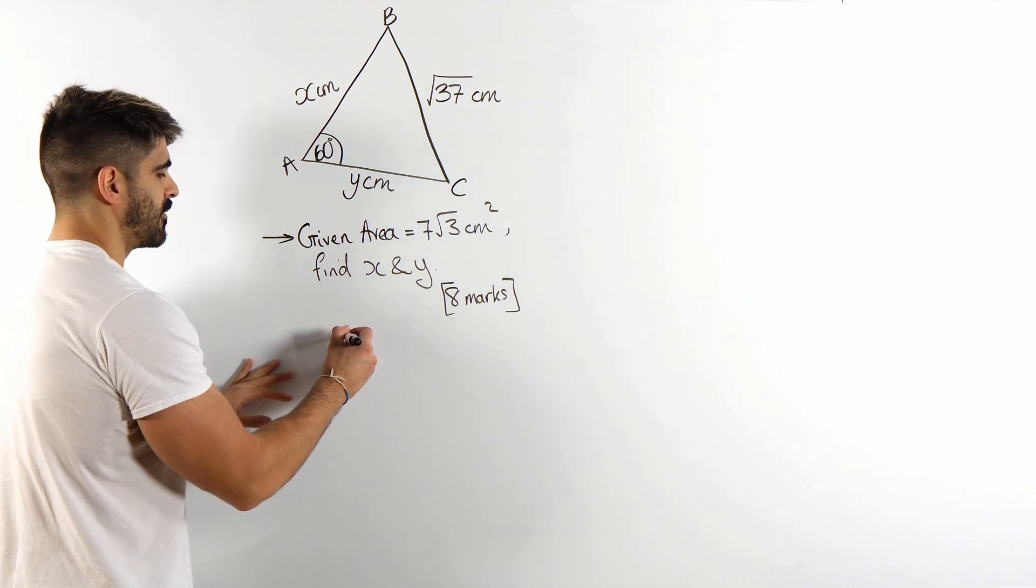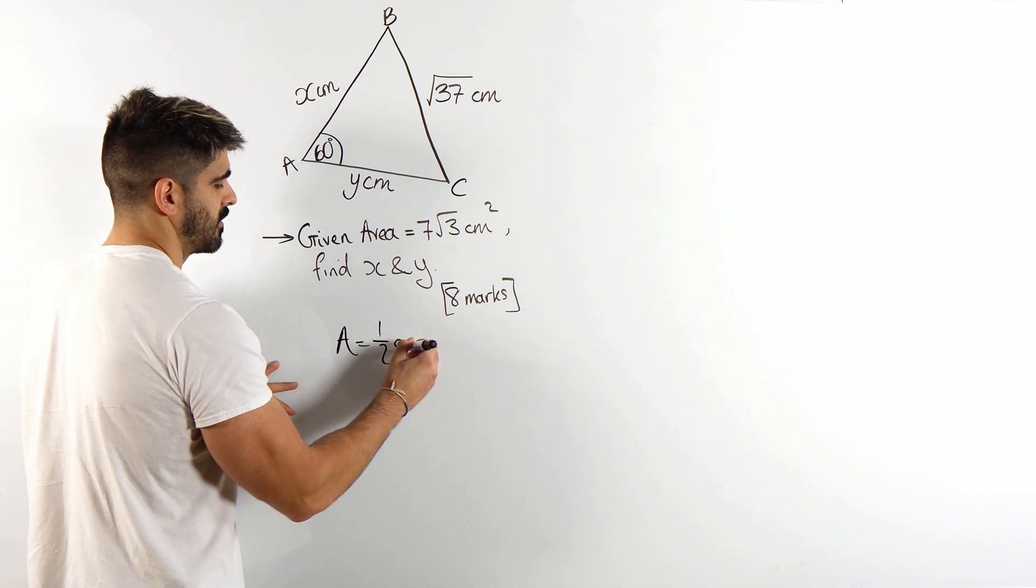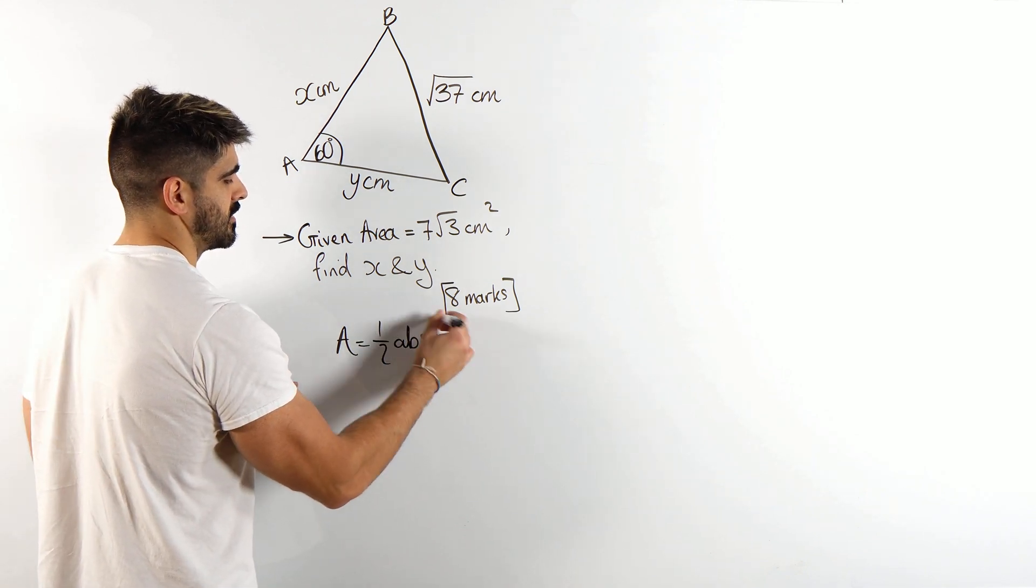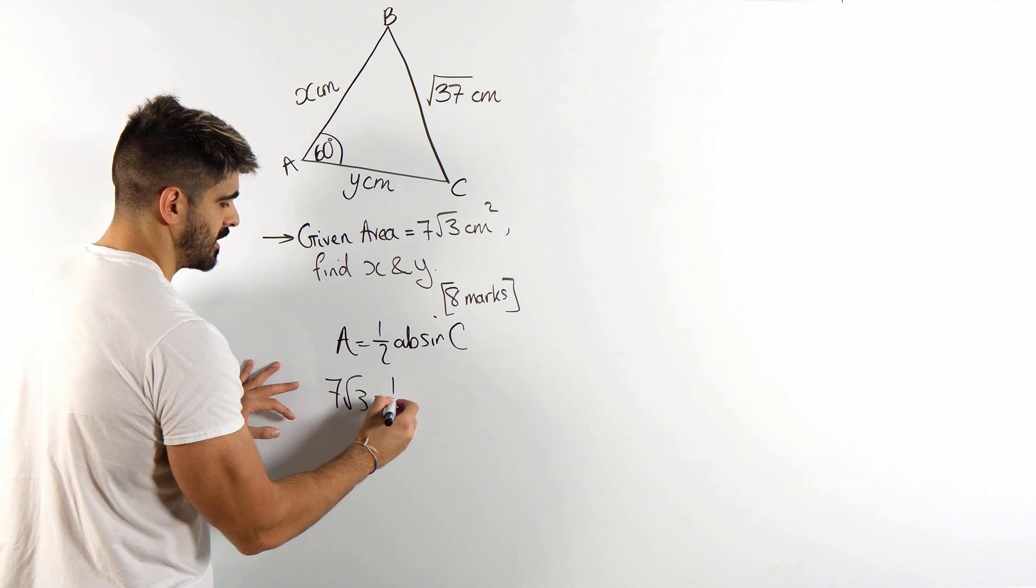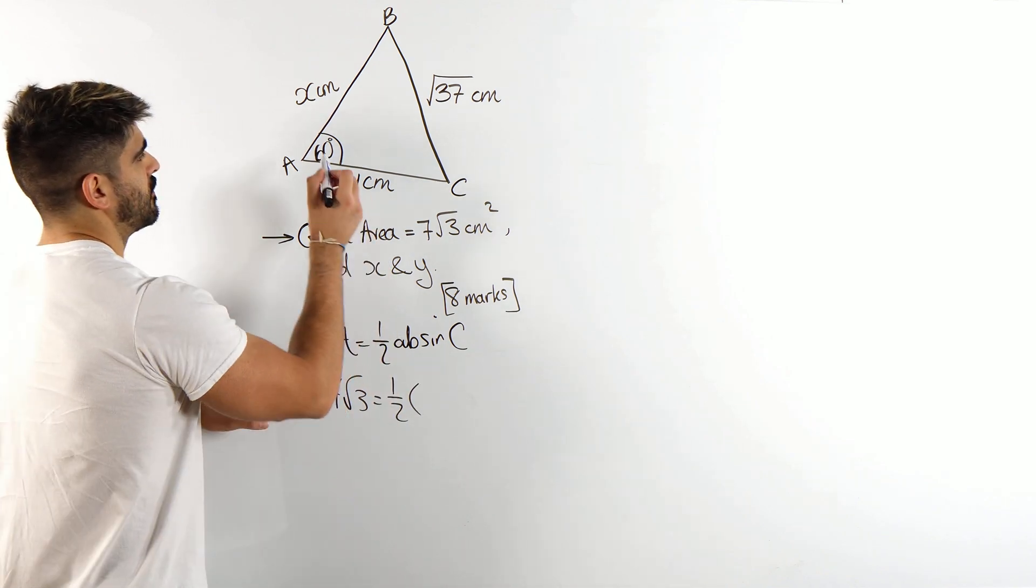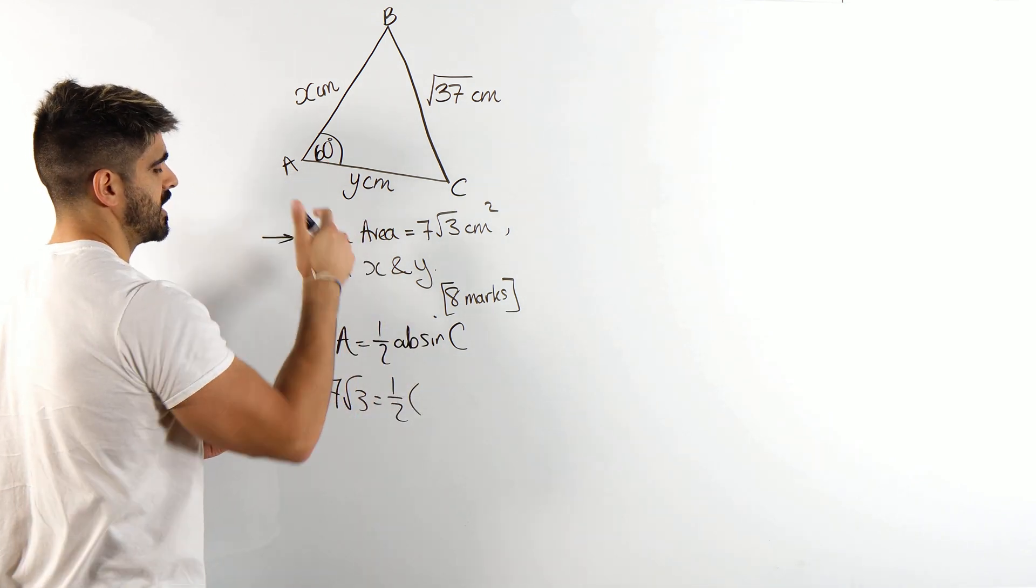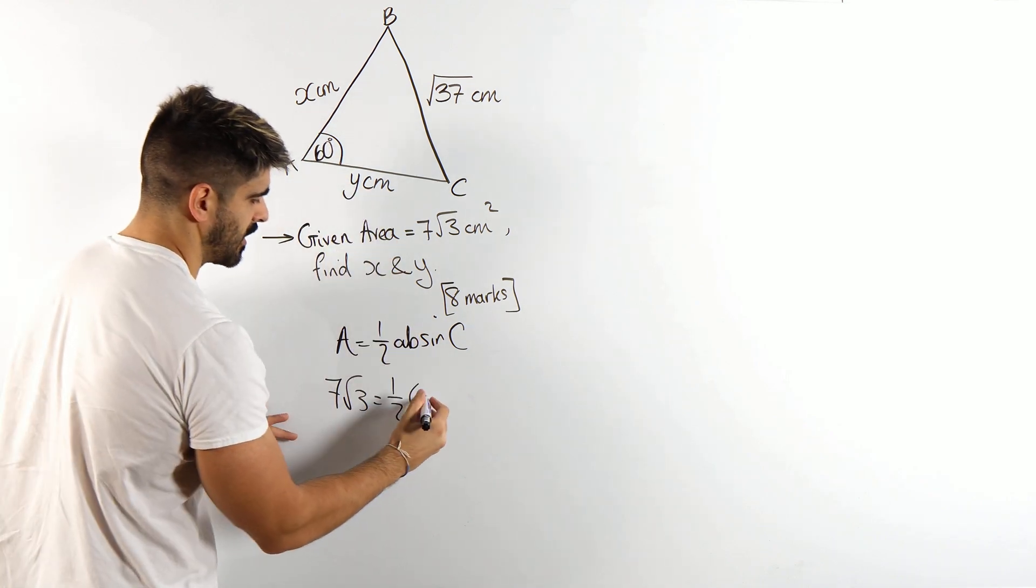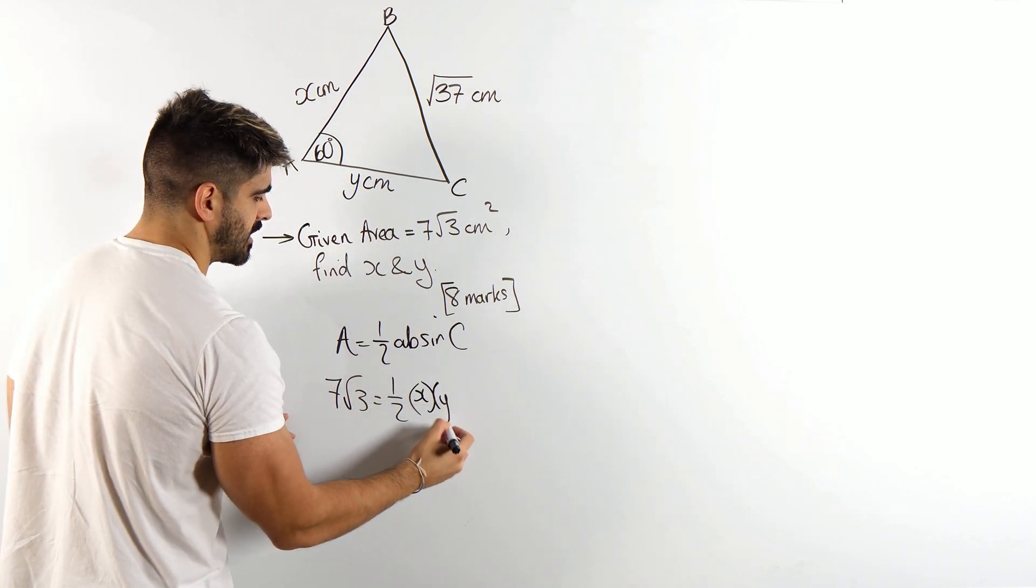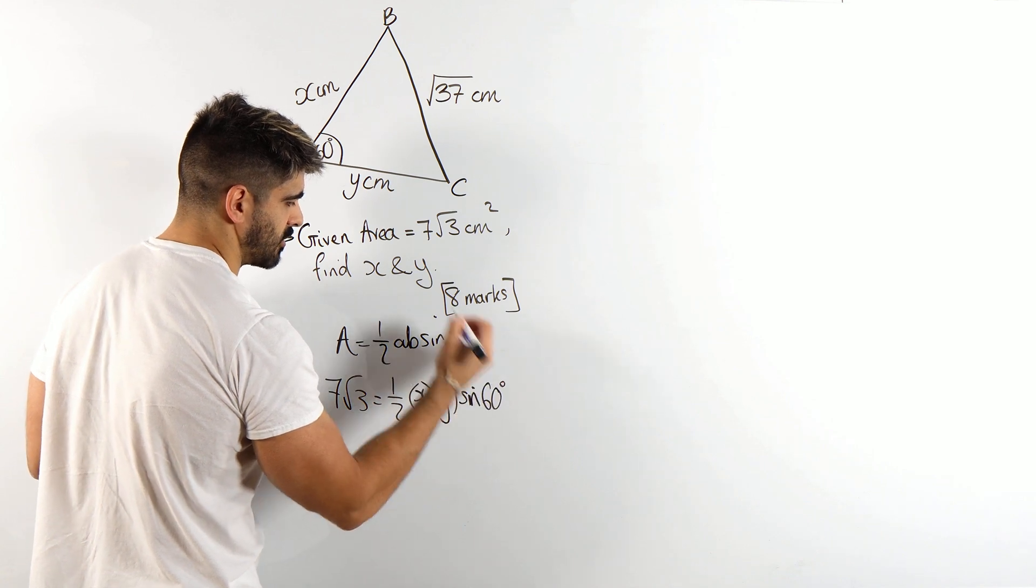The area of a non-right-angled triangle, it's a half AB sine C. They're telling us that that area is 7 root 3 is a half. First locate the angle you're going to be using is obviously 60 degrees, then your A's and B's are the lengths on either side. So we have x, y, you don't even really need the brackets where we're dealing with algebra.